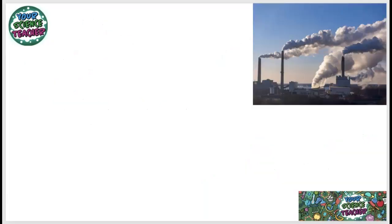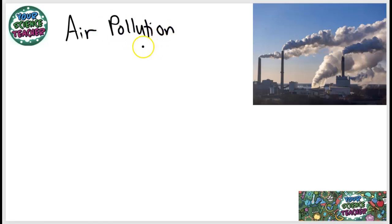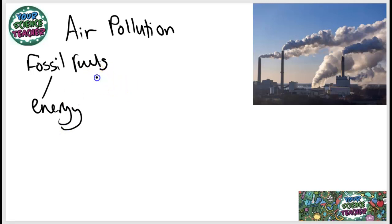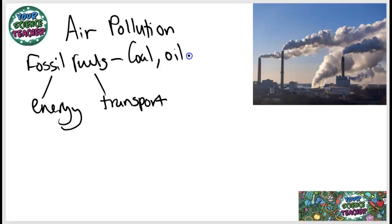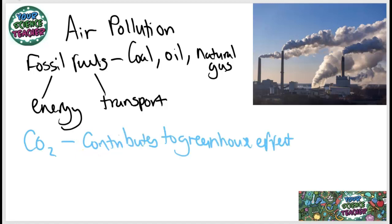As well as land and water pollution, humans are having a massive effect on air quality. We are polluting the air massively. One reason for this is the amount of fossil fuels we are burning. We rely on fossil fuels for energy as well as for transport. Some examples of fossil fuels include coal, oil and natural gas. One gas released when we burn these fossil fuels is carbon dioxide, which contributes to the greenhouse effect, and the greenhouse effect subsequently leads to global warming.